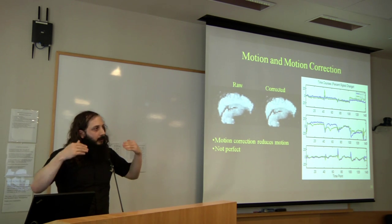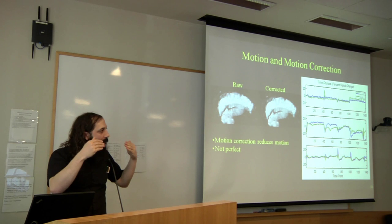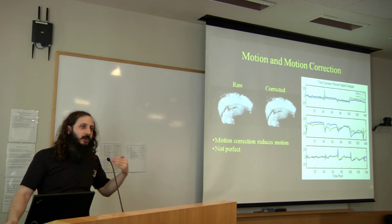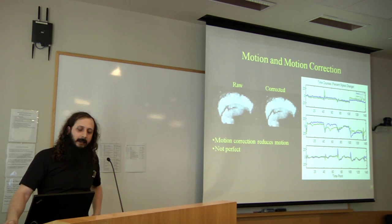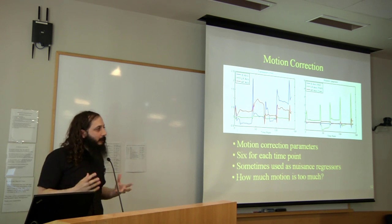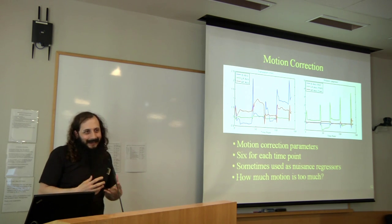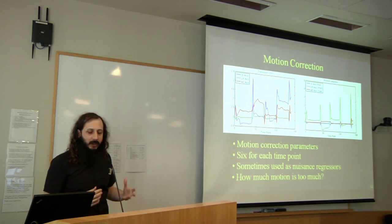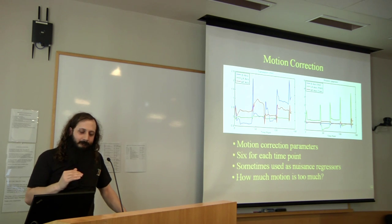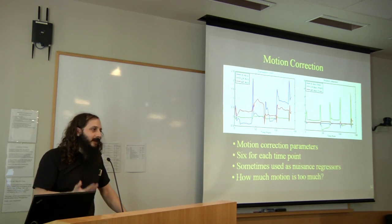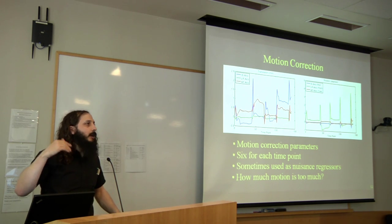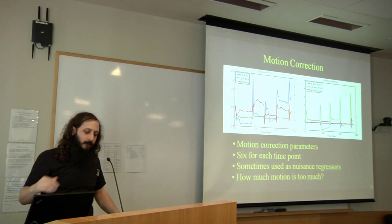Motion correction is important to ensure that voxels are sampling from one anatomical location across the entire time series, but it's not perfect — it still leaves some intensity changes due to overt motion. In order to perform motion correction, we track the motion and can measure translation and rotation — six parameters for every time point. We can use these motion parameters as nuisance regressors in our regression analysis to account for the fact that image intensities change a little during motion.